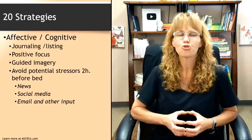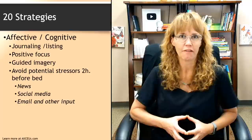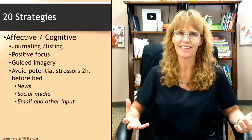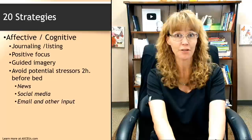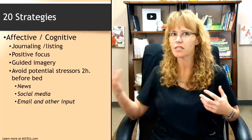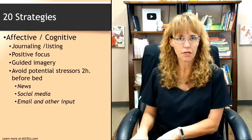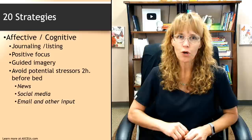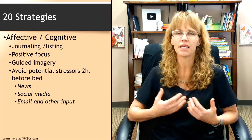Emotionally and cognitively, a lot of people struggle with getting to sleep because they can't shut their mind off. Journaling and listing can be really helpful. When you journal, you're writing down all your thoughts, and when your brain thinks it doesn't have to hold on to this anymore because it's down in black and white, it's easier to let go. Listing can be another strategy if you have a lot of anxiety or keep thinking of things you need to remember. Keep a notepad or your phone with a blue light blocker next to your bed so you can jot it down quickly and go back to sleep.